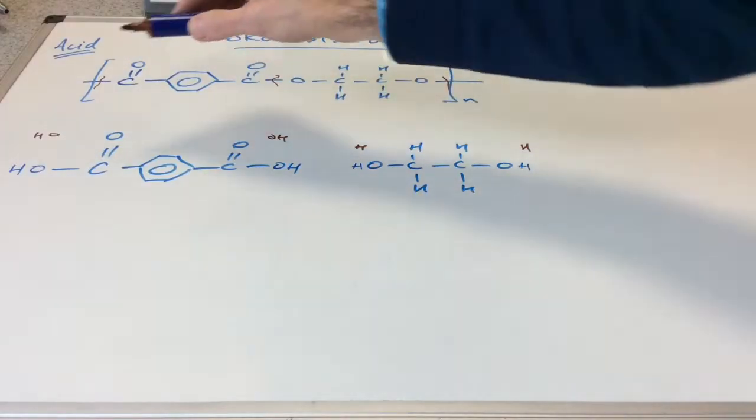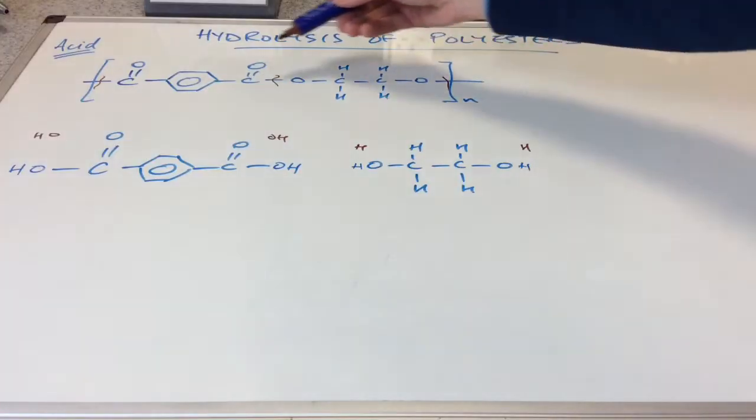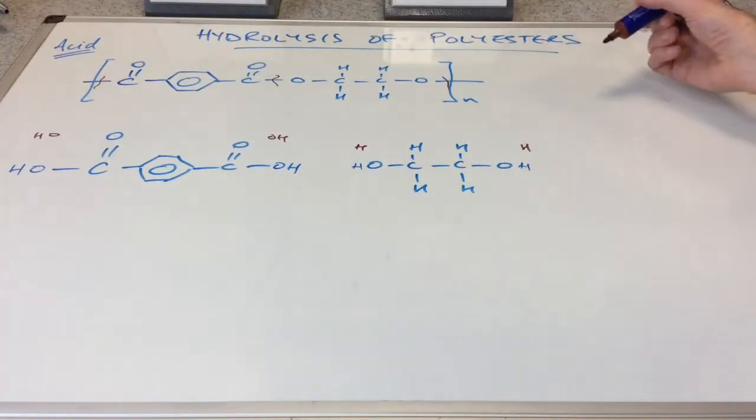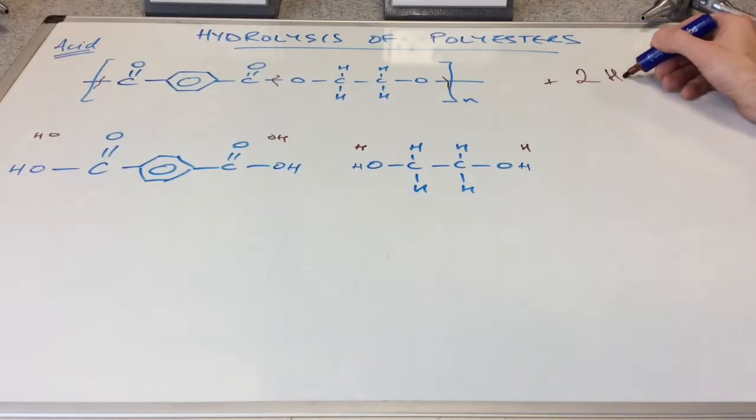If we count them up, we've got four H's and two O's. So in other words, for this entire repeat unit, we've added two moles of water.